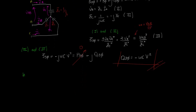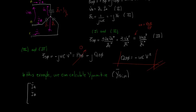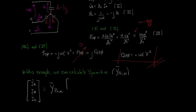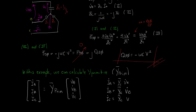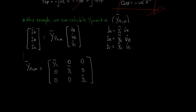The same way we did in the last tutorial video, we can calculate the Y-primitive matrix for the capacitors as well. We know that it relates the injected currents with the nodal voltages. In this example, the relation between the injected current and the nodal voltage in each phase is pretty simple. Then, we can easily find that the Y-primitive matrix is a diagonal matrix, with all of the elements in the diagonal being equal to Yc.